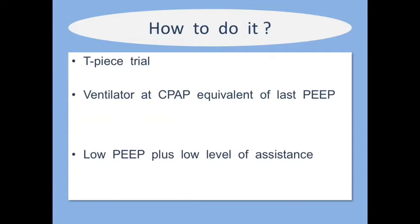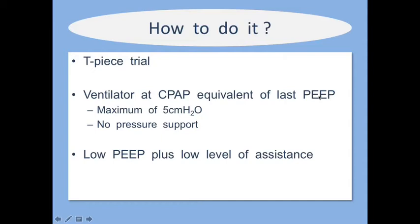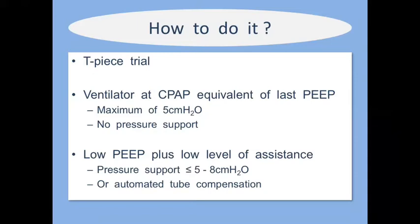There are a few ways to perform a spontaneous breathing trial. The first is a T-piece trial — simply taking the patient off the ventilator and allowing them to breathe spontaneously on a T-piece while providing humidified oxygen. The second is setting the ventilator to effective CPAP with PEEP at the last setting, usually a maximum of 5 cmH₂O, with no pressure support. The third — most commonly used in the ICU — is setting pressure support at 5–8 cmH₂O above PEEP with maximum PEEP of about 5 cmH₂O. Some fancier ventilators also have automated tube compensation to compensate for endotracheal tube resistance.